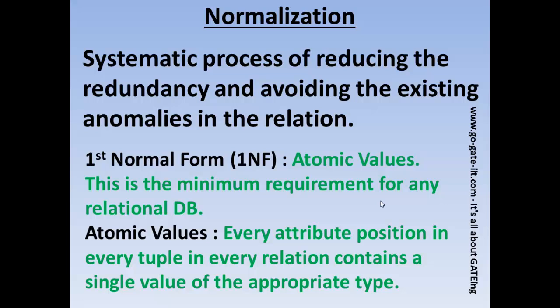We will normalize the database into different tables as per the requirement. Normalizations are of various types. The first and foremost is first normal form, or 1NF. Every relation or every table should be in first normal form. This is a minimum requirement for any relational database.